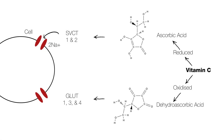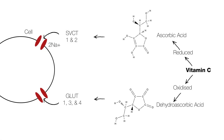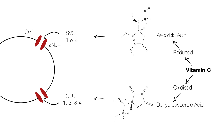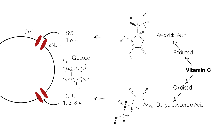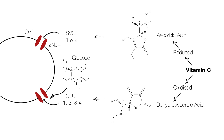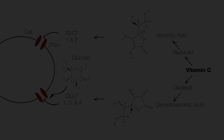GLUT1, 3, and 4 can take the oxidized form, which is dehydroascorbic acid, into the cells. But because vitamin C and glucose are so similar in atomic structure, they can both use the same entry method and create competition with each other. However, glucose can inhibit vitamin C's entry when there's a lot of it around — for example, when you have carbohydrates in your diet.